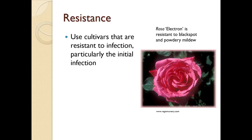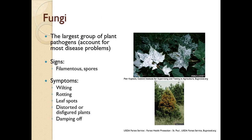Resistance: you want to use cultivars that are resistant to infection. Here we have Rosa Electron, which is resistant to black spot and powdery mildew. Fungi is the largest group of plant pathogens — most of our disease problems are going to be here. Signs include filamentous structures such as mycelium and hyphae, or spores. Some of the symptoms you may see are wilting, rotting, leaf spots, damping off, and distorted or disfigured plants.